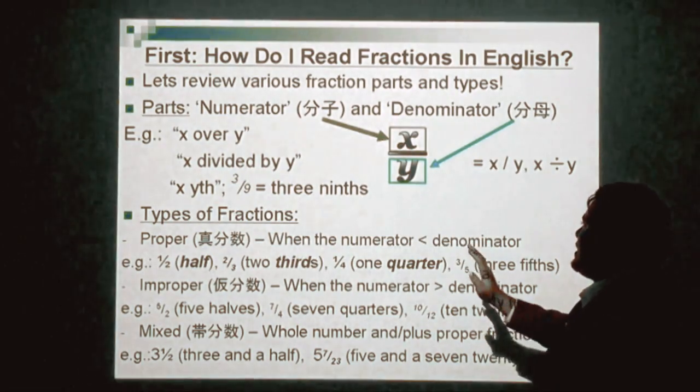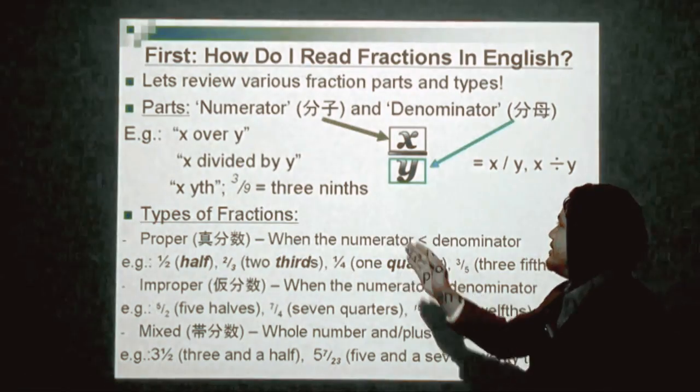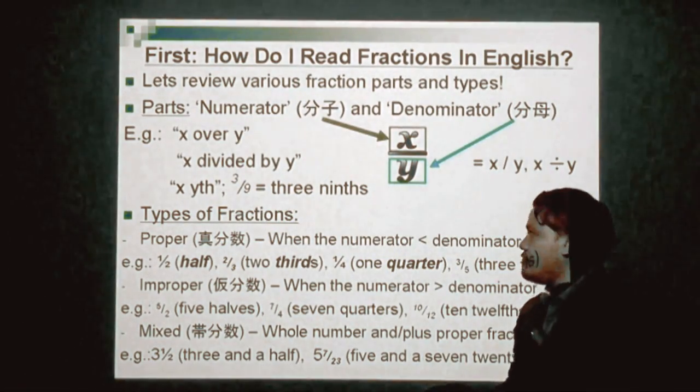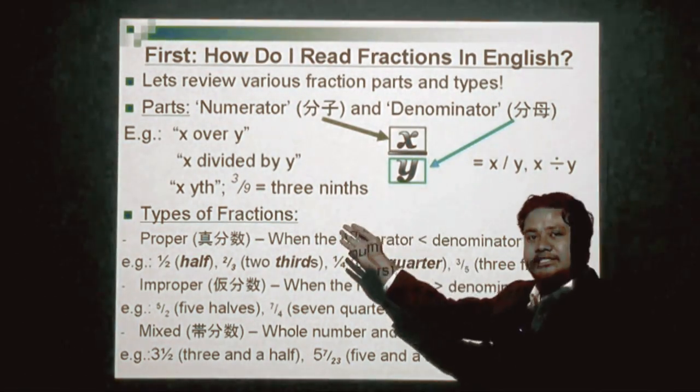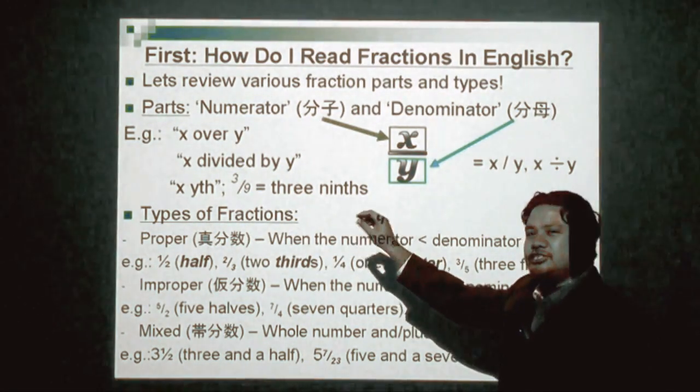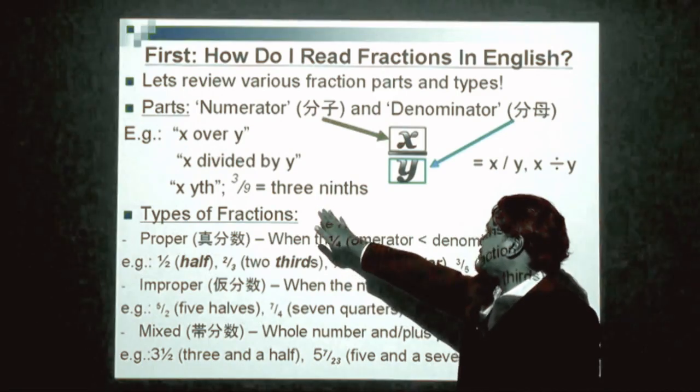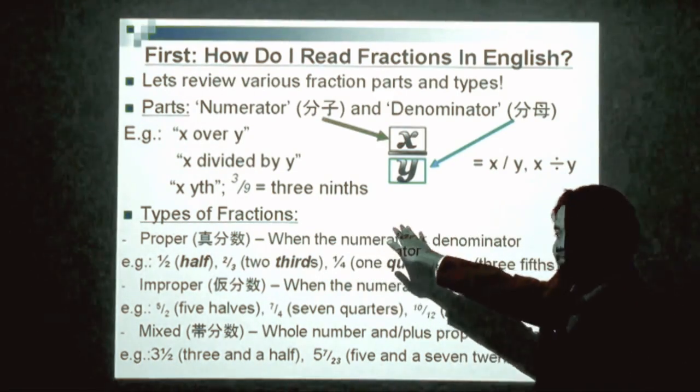Now, there are many ways to call a fraction. If you look at the example here, first of all, you can say x over y, x divided by y, or x yth—meaning, for example, if it's 3 over 9, you can say 3 ninths.